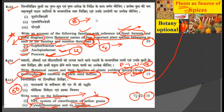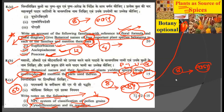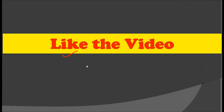By seeing these 8 questions, you will get an idea of how UPSC asks questions in the Botany Optional. This seems to be a very easy paper. What do you think — is it easy, medium, or hard? Please mention your views in the comment box, like the video, share it with friends who are studying botany, and subscribe to the Botany Optional channel for the UPSC examination.